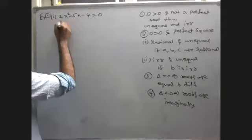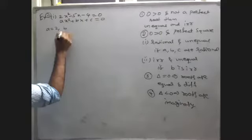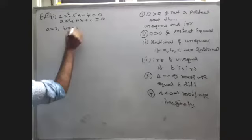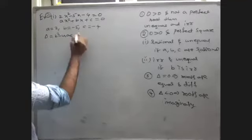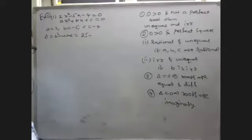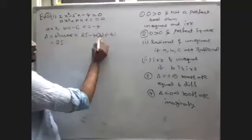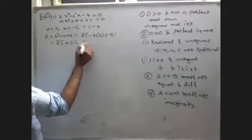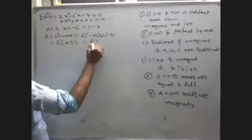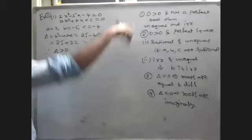Comparing with ax² + bx + c = 0, we get a = 2, b = -5, c = -4. Delta = b² - 4ac = (-5)² - 4(2)(-4) = 25 + 32 = 57, which is greater than 0. So delta is greater than 0.